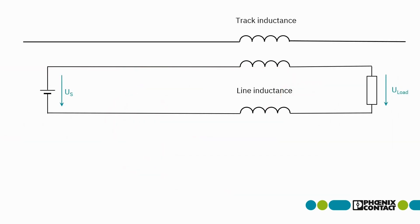This equivalent circuit diagram explains the effects. The upper coil symbolizes the track inductance, and the lower ones those of the influenced cables.